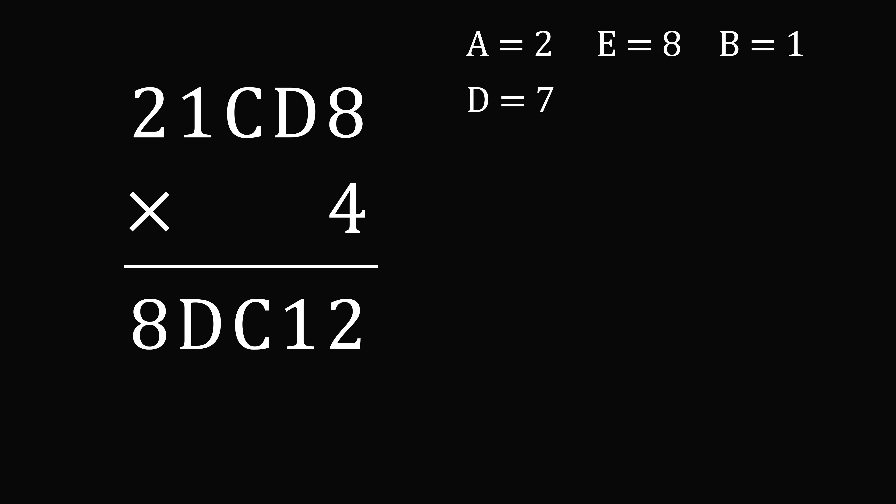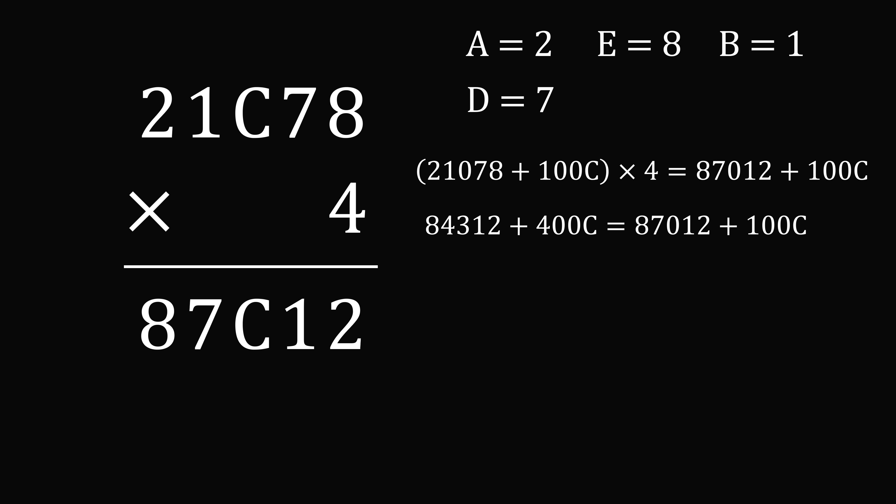So now all that remains is to solve for the letter C. And I think we can do this algebraically very easily. The number we have is 21,078 plus 100C. We need to multiply this by 4. And that's equal to 87,012 plus 100C. We distribute the 4. And then we simplify this equation. So we have 300C is equal to 2,700. Dividing both sides by 300, we get C is equal to 9.